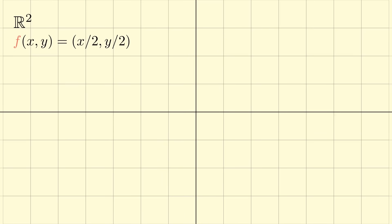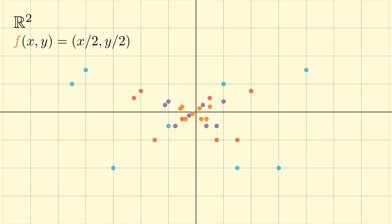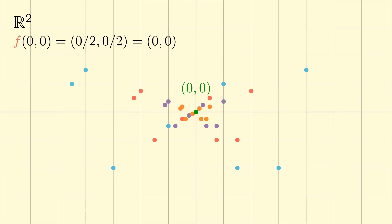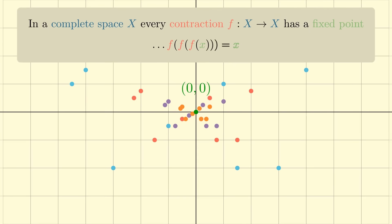Let's see an example in action. Here is the two-dimensional plane, and the contraction function that we will be considering is the function that takes a point and divides each coordinate by 2. Let's plot some points in the plane and see what happens after we apply the function. You can see that they appear to shrink in to the origin of the grid. Let's apply it again and again — they get closer and closer after repeated applications of the function. The point that they are converging to is the point (0, 0), which is indeed a fixed point of the function. This is related to the statement of our theorem, which says that the repeated application of a contraction always approaches a fixed point.